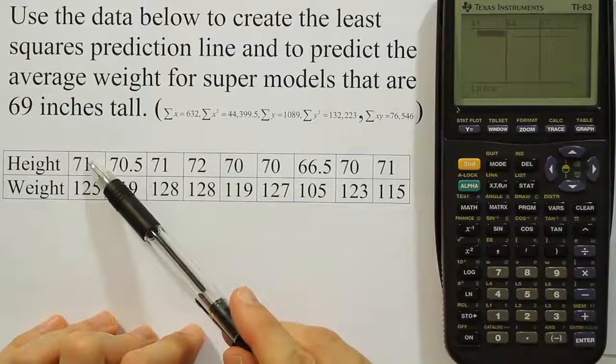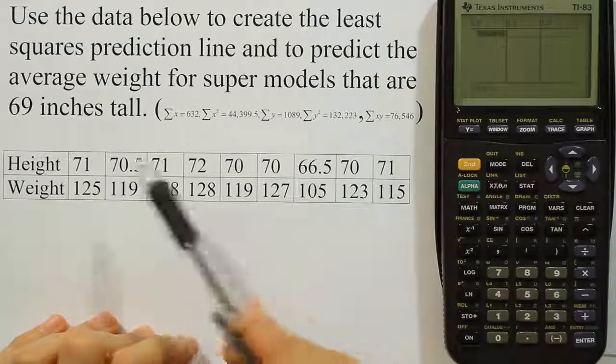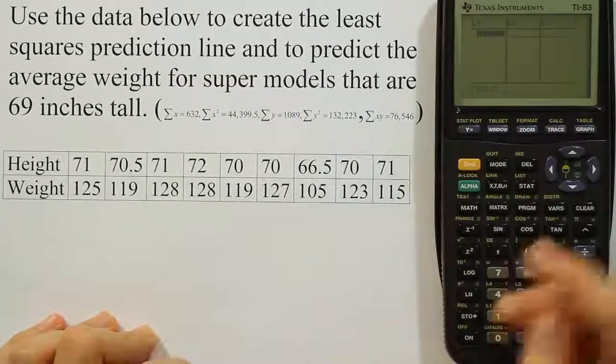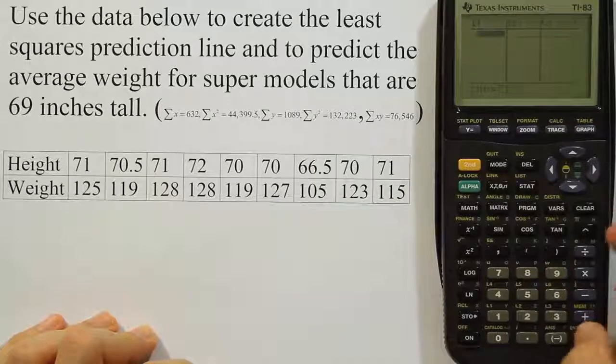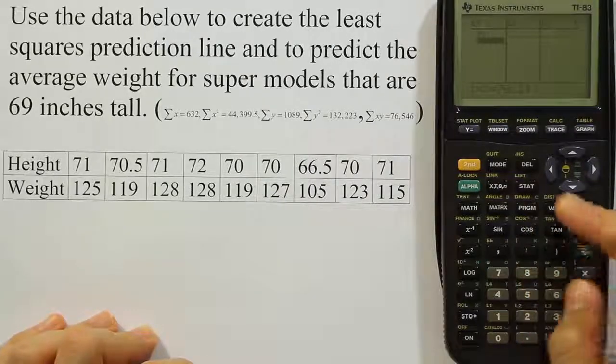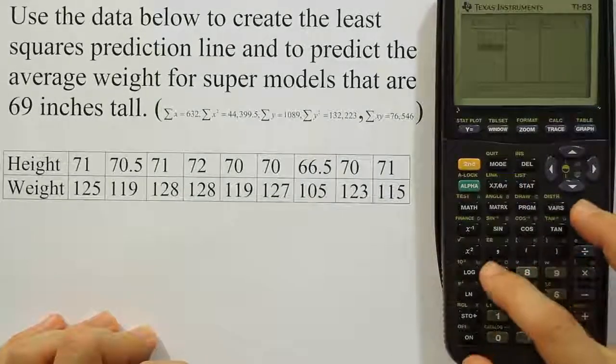What I'm going to do first is let the heights go into L1. Height is going to be my x variable, so I'm going to enter that into my first list. So I'll type 71, enter, 70.5, enter, then 71.